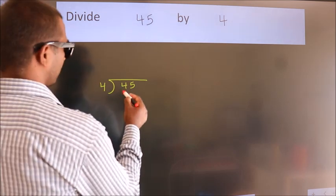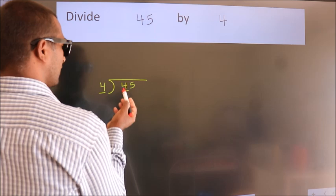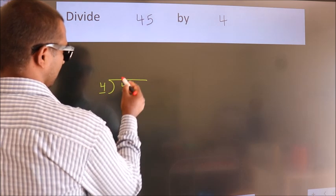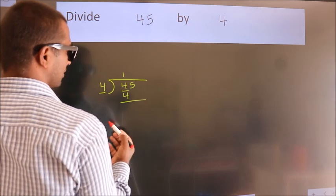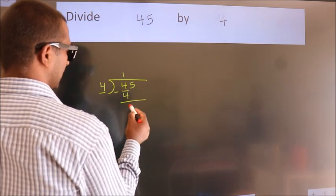Here we have 4, here 4. When do we get 4? In the 4 table: 4 once is 4. Now we should subtract. We get 0.